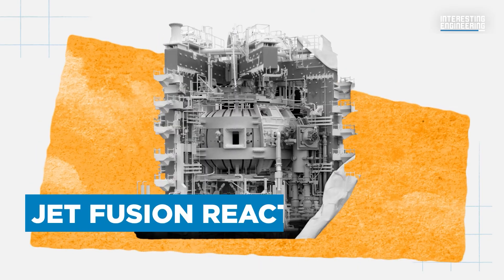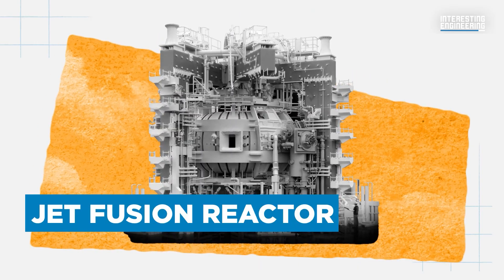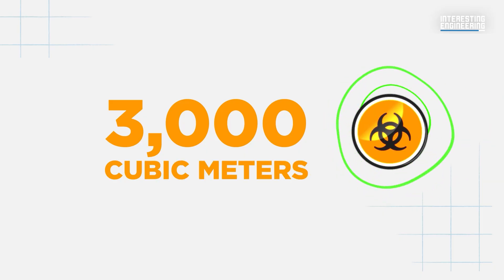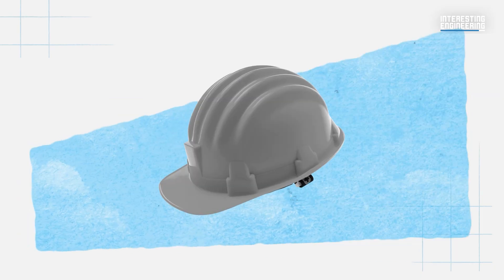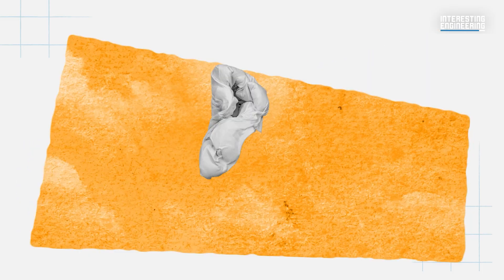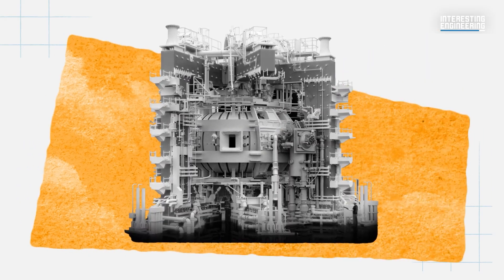The JET fusion reactor, which was recently decommissioned in the UK, has an estimated 3,000 cubic meters of radioactive waste. The decommissioning effort is estimated to cost 300 million US dollars and is expected to be completed only by 2040.